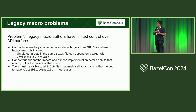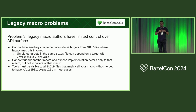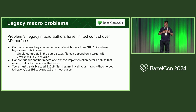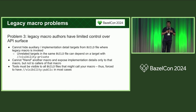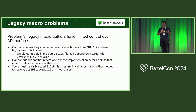Problem number three: legacy macros have very limited control over their API surface — the distinction between targets you as the macro author want users to see versus auxiliary targets which are intended to be implementation details. A legacy macro cannot hide its auxiliary targets because private visibility for a target defined in a legacy macro still leaves that target visible to other targets in the same package. Conversely, a legacy macro cannot declare another macro as a friend without also giving whatever build file calls that friend macro the ability to depend on those internal targets. Tools used by legacy macros must be visible to every package where the macro might get called, which in practice means those tools usually have to have public visibility.